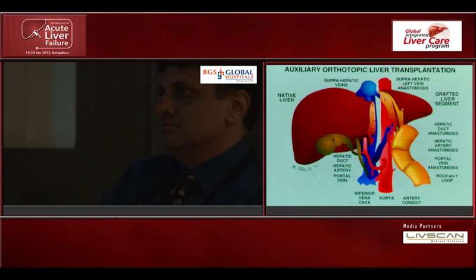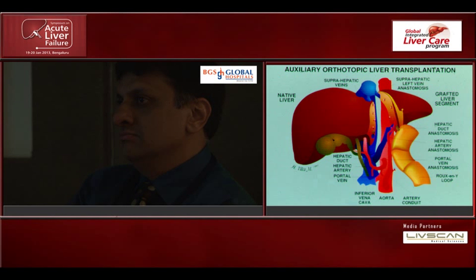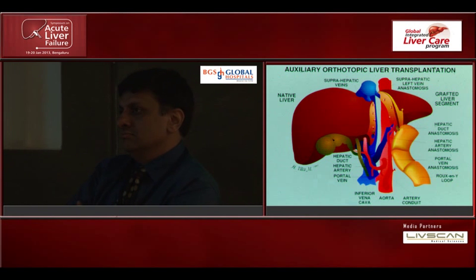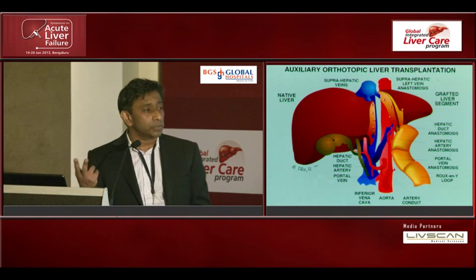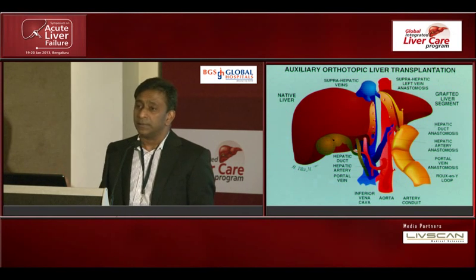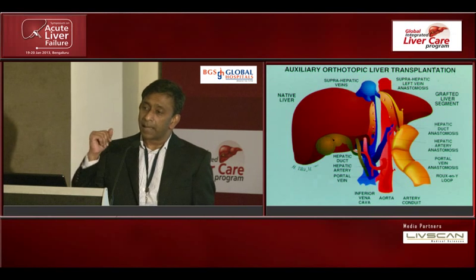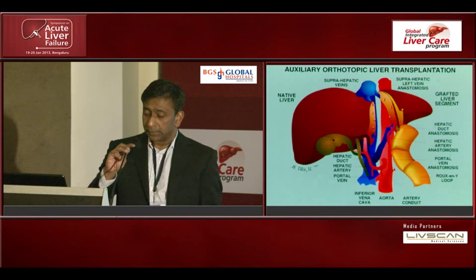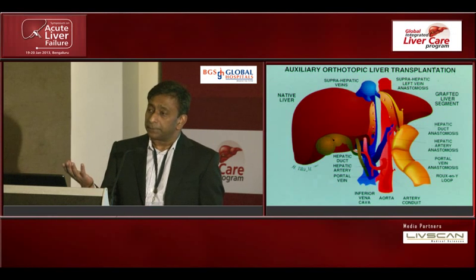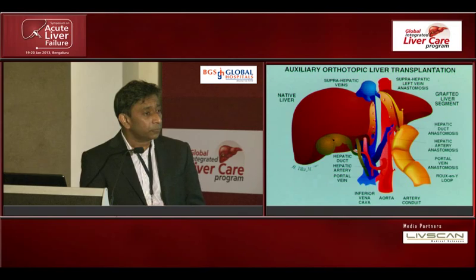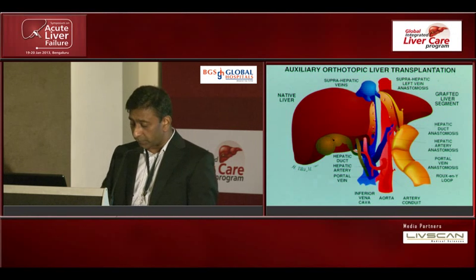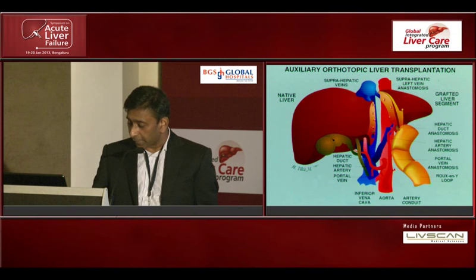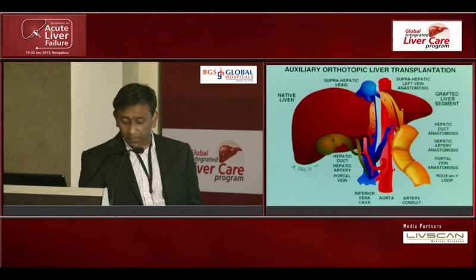Auxiliary liver transplant is indicated for two conditions. One is acute liver failure, which we are going to talk about, and the other is metabolic liver disease. Some metabolic liver diseases require very little liver — Crigler-Najjar syndrome is an example. You put 15% of liver and you will correct the underlying metabolic liver disease. It's a perfect operation for Crigler-Najjar syndrome. Whereas with acute liver failure, you need a large volume of liver for a patient to recover, and you couldn't do a left lateral segmentectomy.